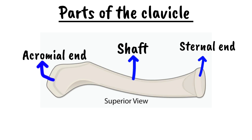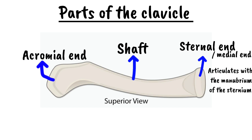The sternal end, also the medial end of the clavicle, has a large facet that articulates with the manubrium of the sternum, forming the sternoclavicular joint. The inferior surface of the sternal end features a rough oval depression where the costoclavicular ligament attaches.